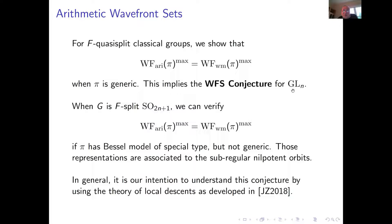This conjecture holds in the generic case. If G is F-split odd orthogonal we can verify this identity when Π has a Bessel model of special type but is not generic, meaning these representations are associated with a sub-regular nilpotent orbit. So in this special situation these sets are the same. In general it's our intention to understand this conjecture using local descent as developed in work with Lei Zhang 2018.